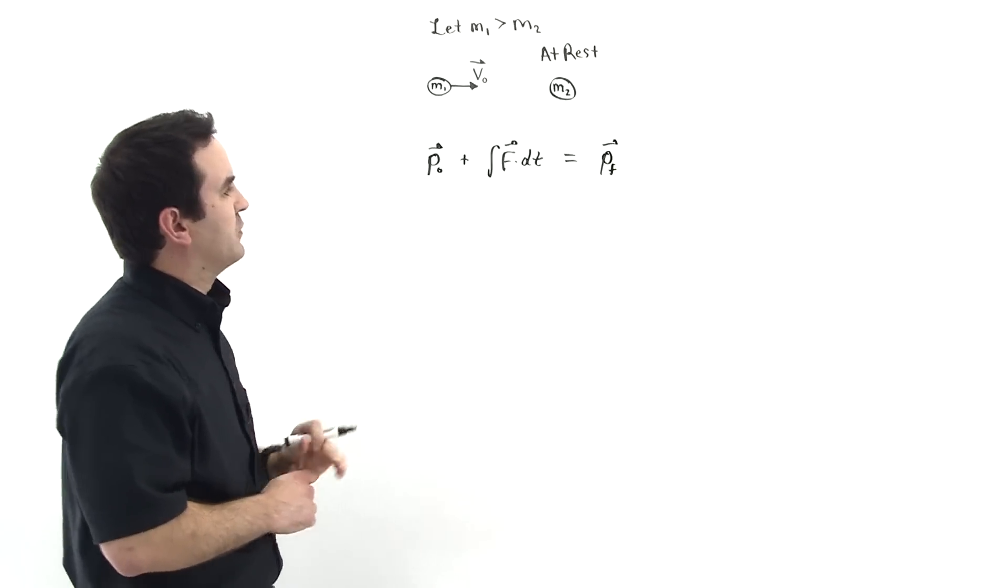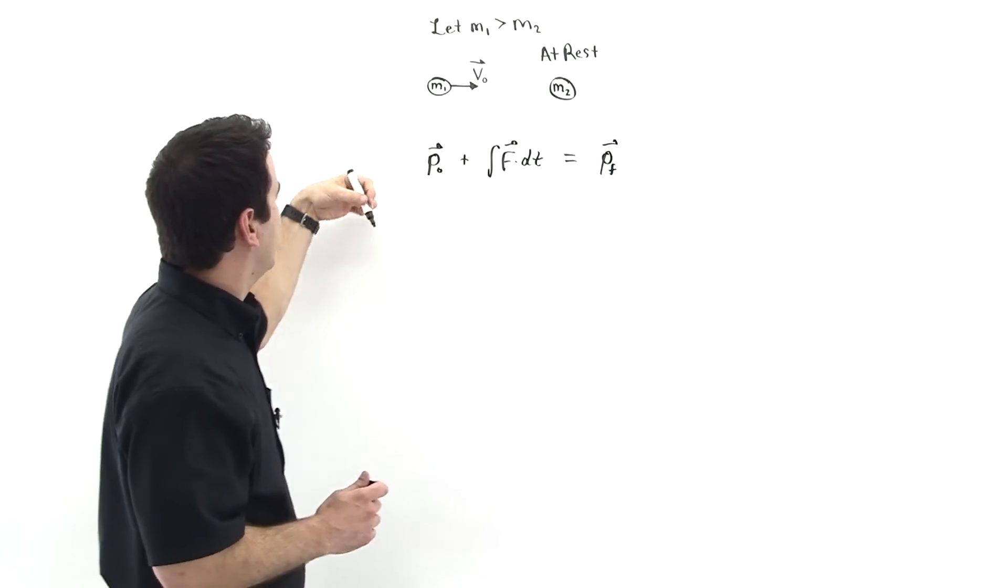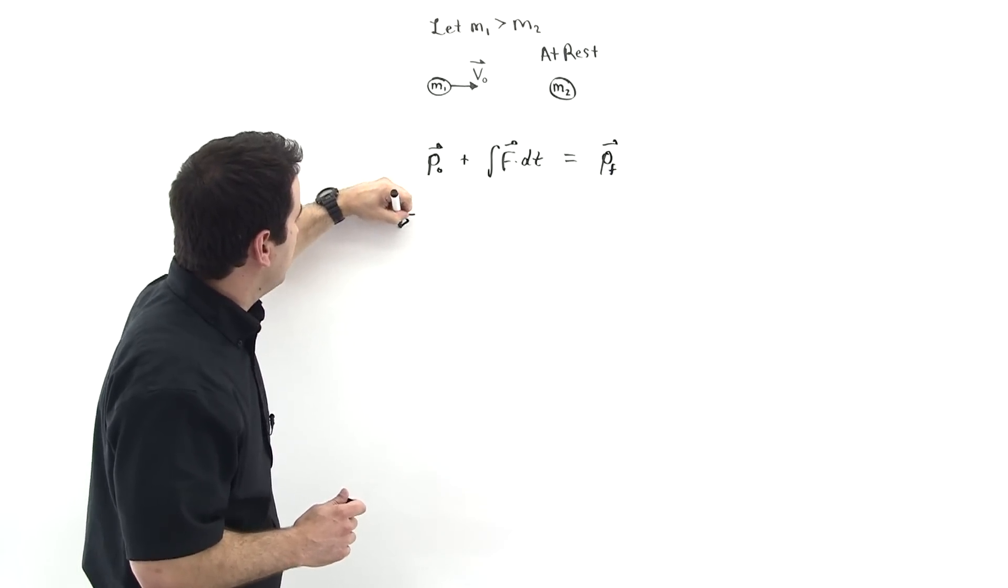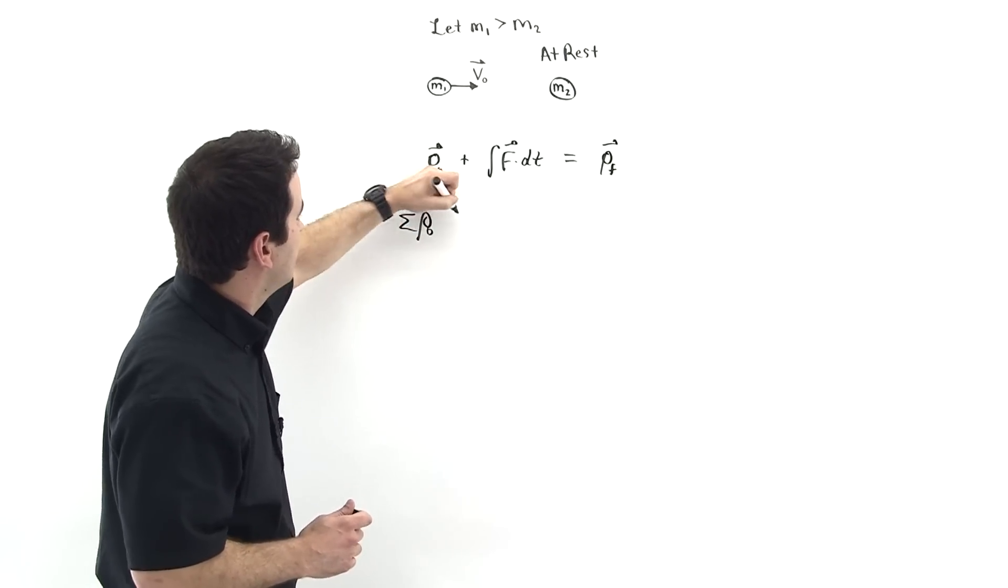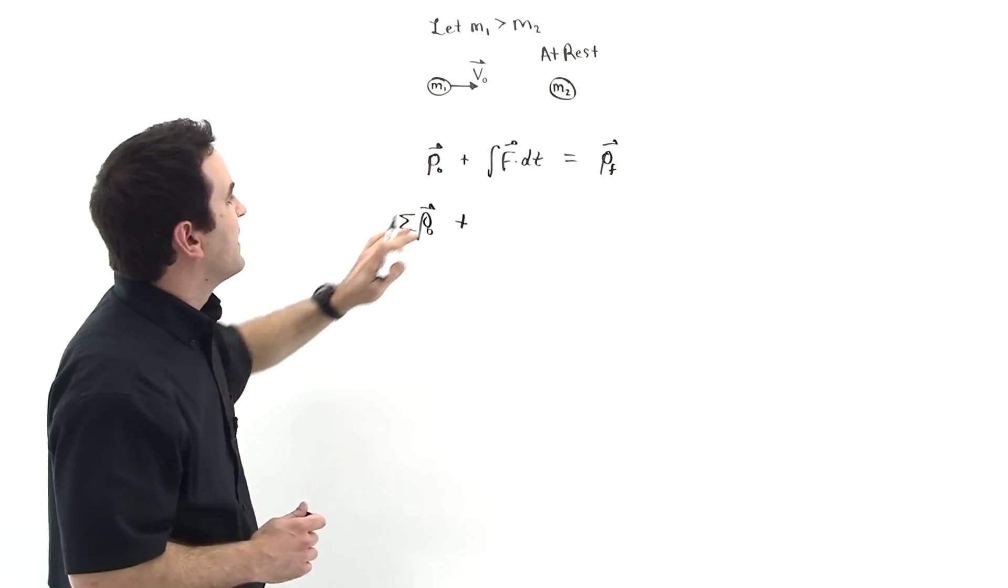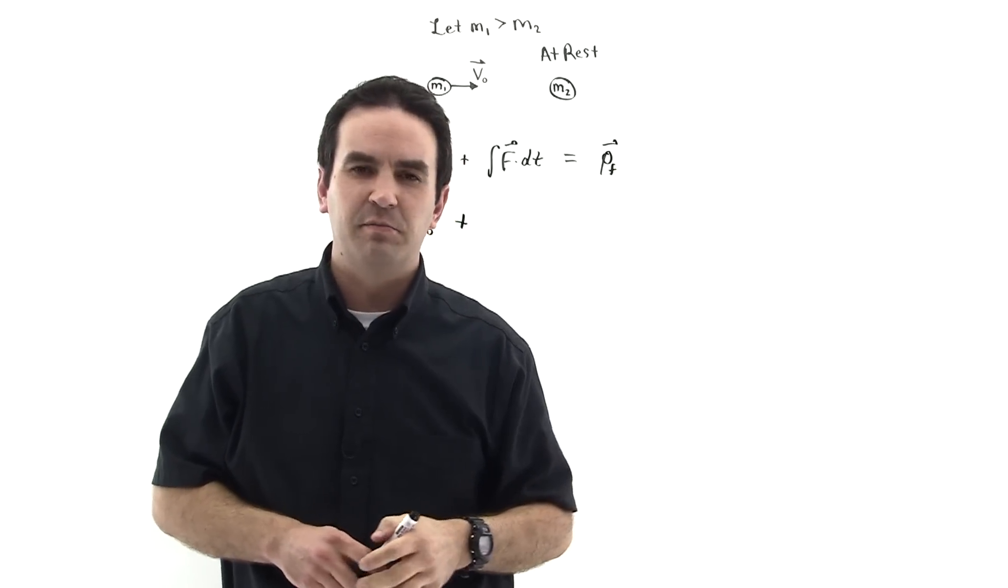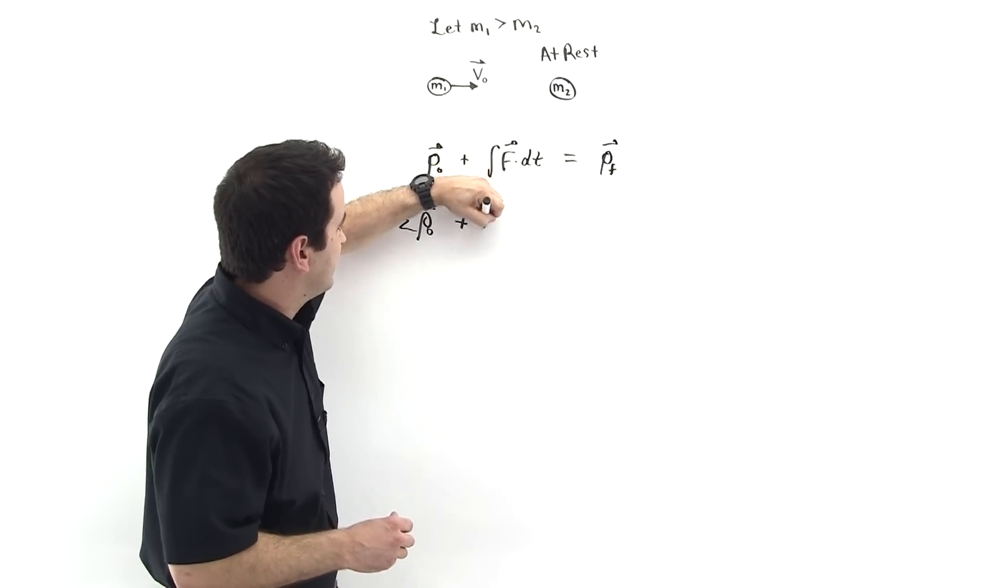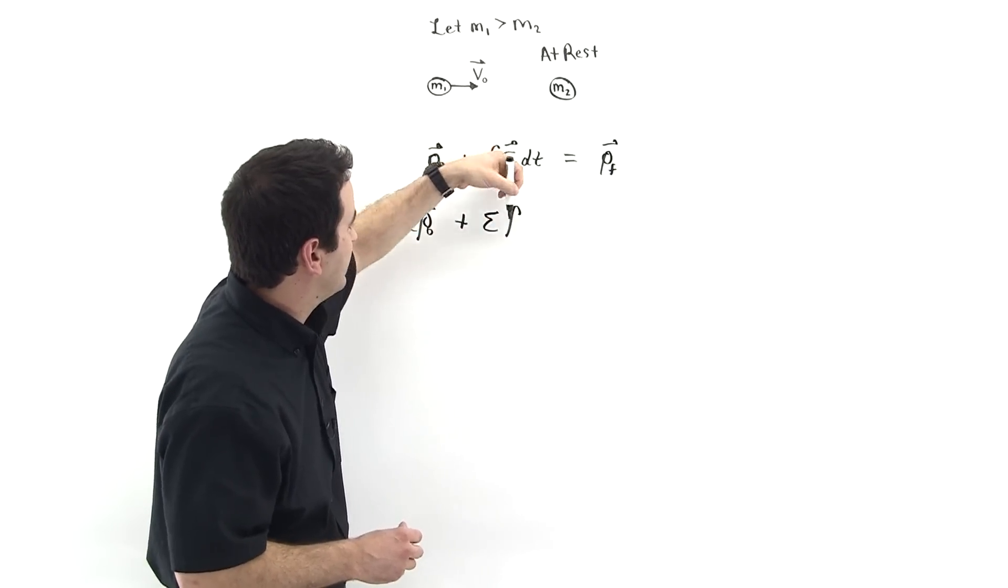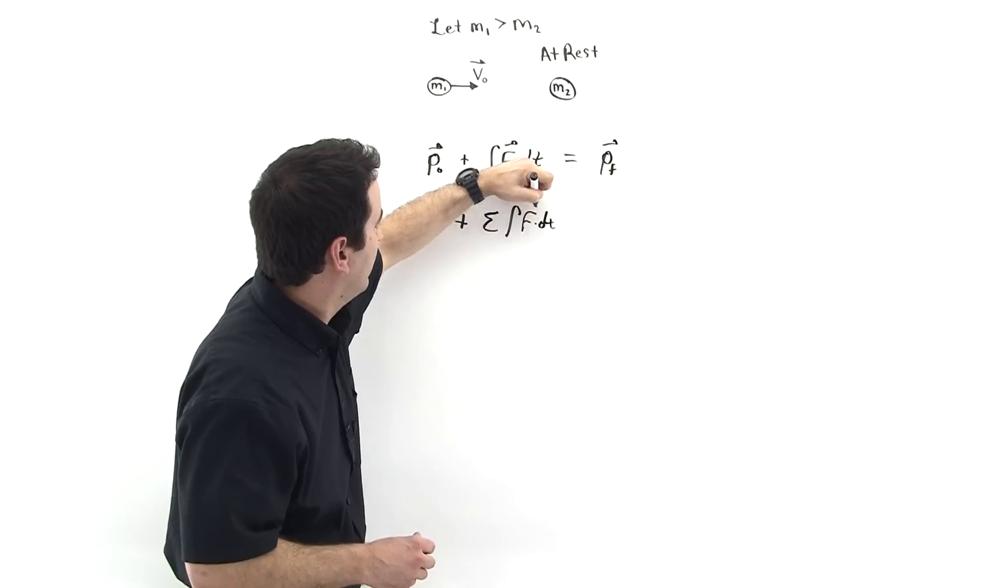But we have two particles, so we need to take into account the sum, right? So let's say the sum of the initial momentum, sigma p-zero, like this, plus this term here. This is the external forces acting on the system. So if we wanted to, we could say that this is the sum of the external momentum acting on the two particles, like this.